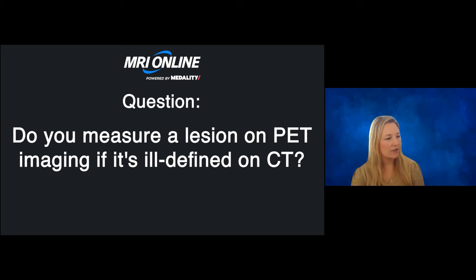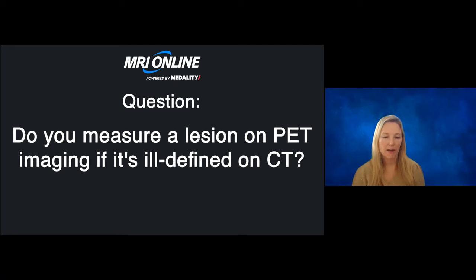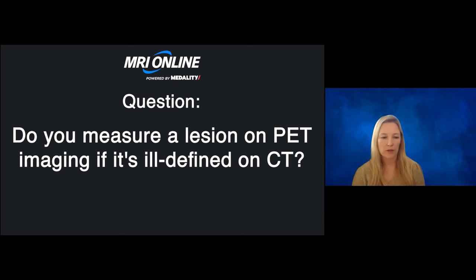Do you measure a lesion on a PET image if it's ill-defined on CT? Sometimes the answer is yes. If I'm reading a PET where diagnostic imaging was done in the past month or two — for instance, a pulmonary mass or nodule — I know the measurements from the diagnostic CT are going to be significantly more reliable than those from my attenuation correction CT. So if I'm providing a measurement, I'll use the one from the diagnostic CT. But there are cases where we don't have diagnostic imaging available, or it's not within the right timeframe, or the lesion has changed.